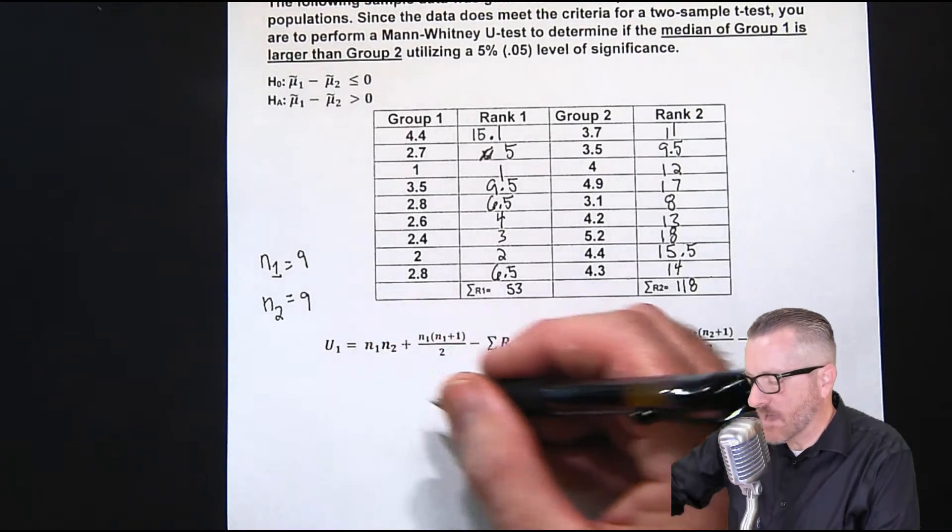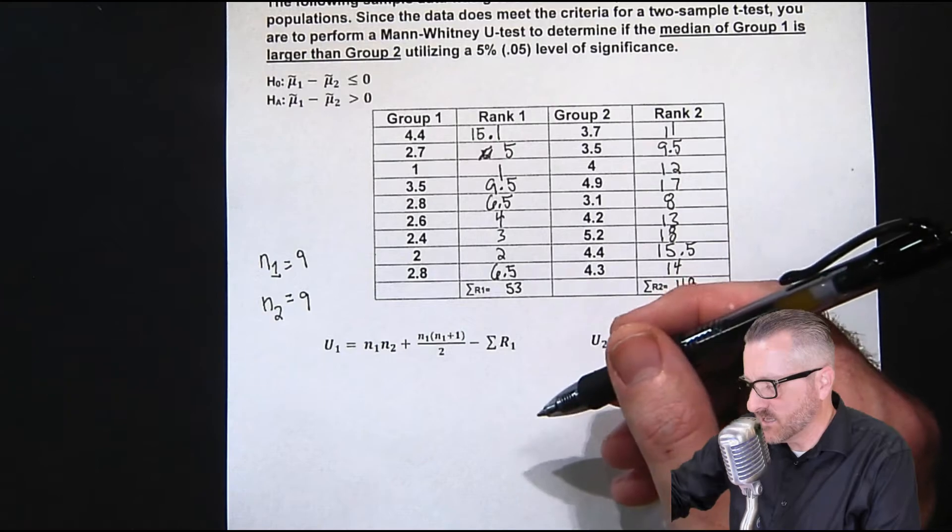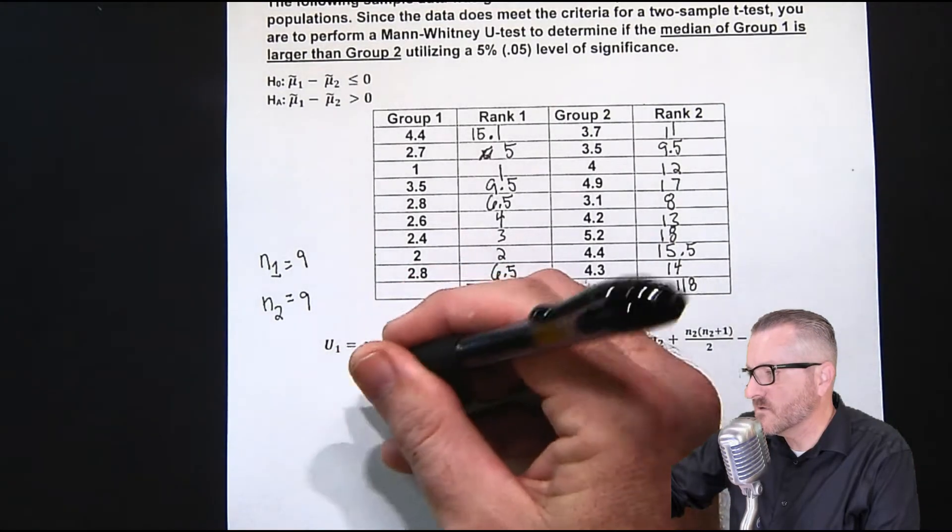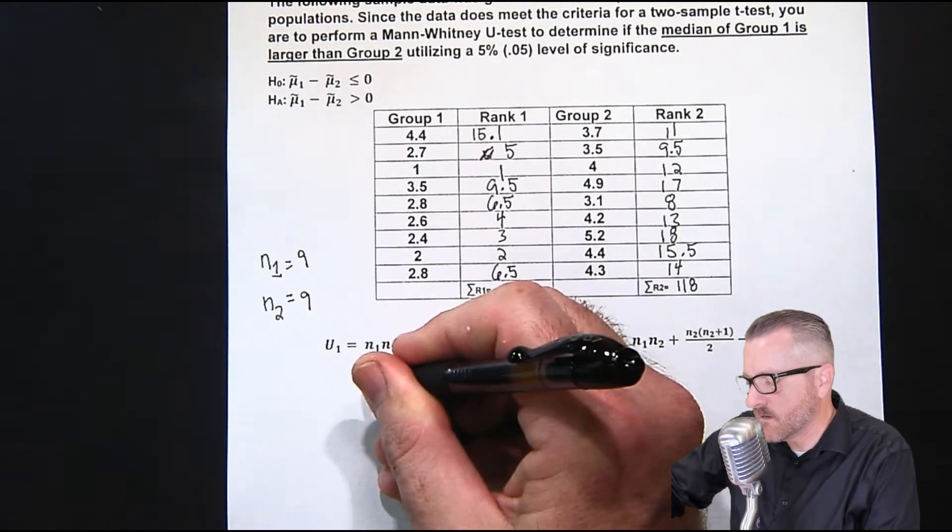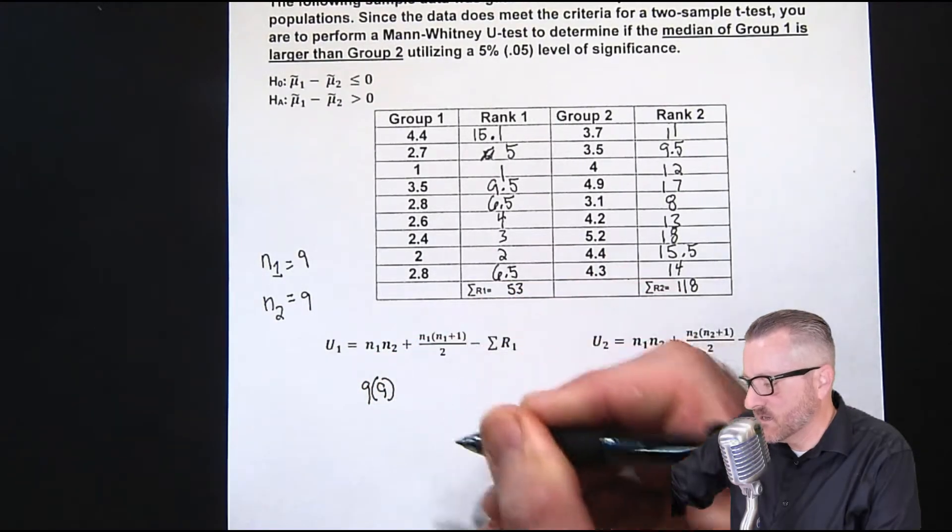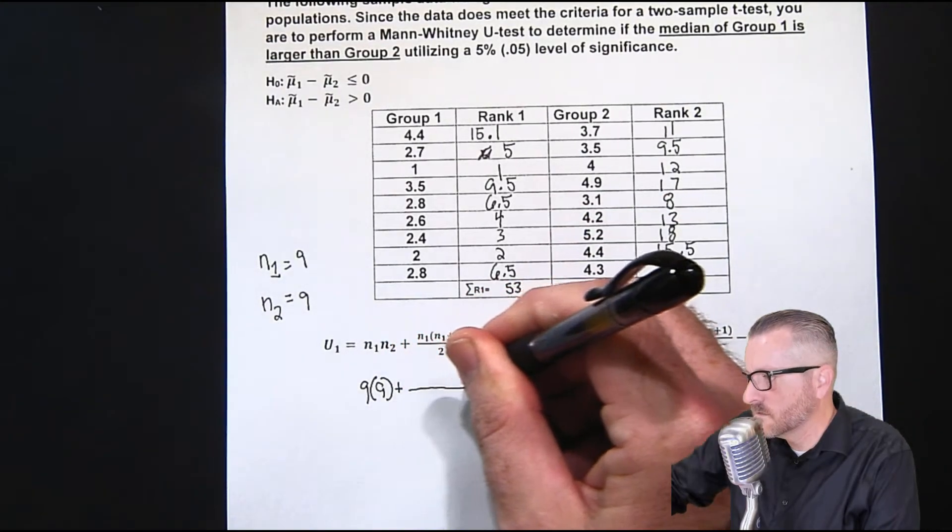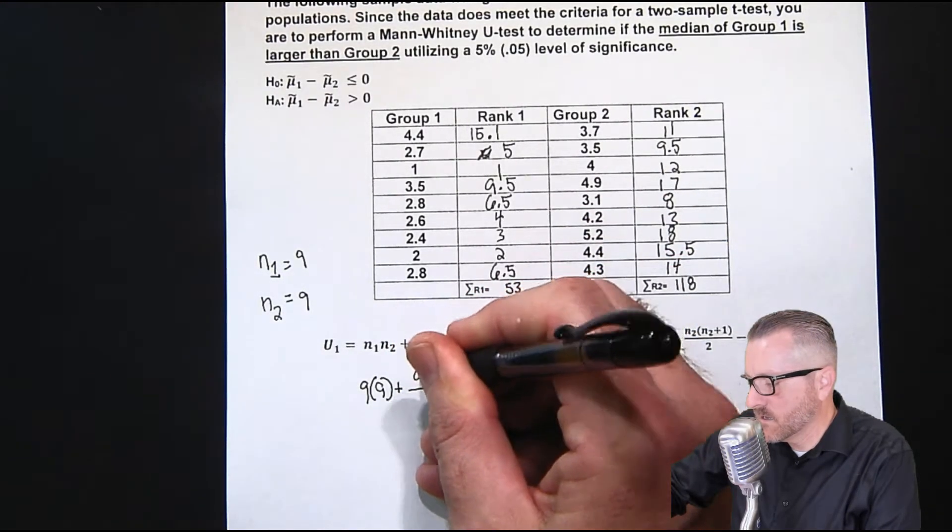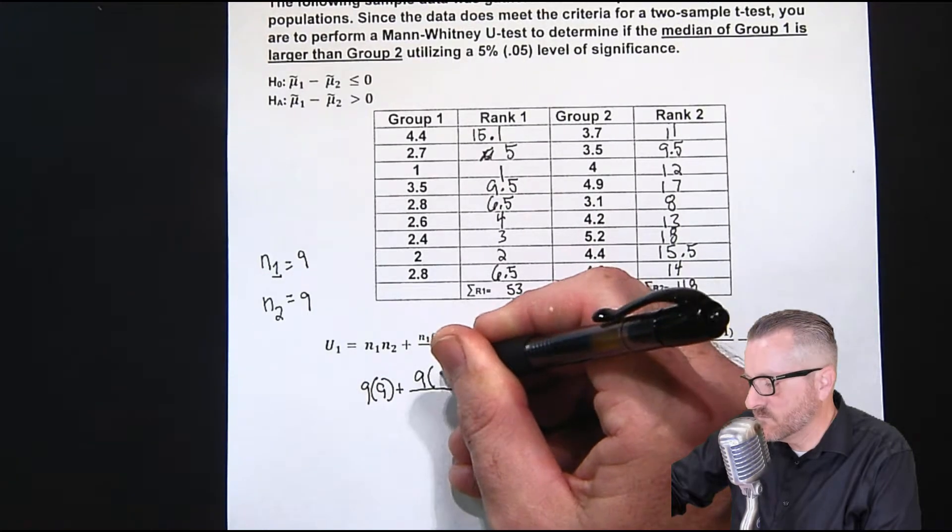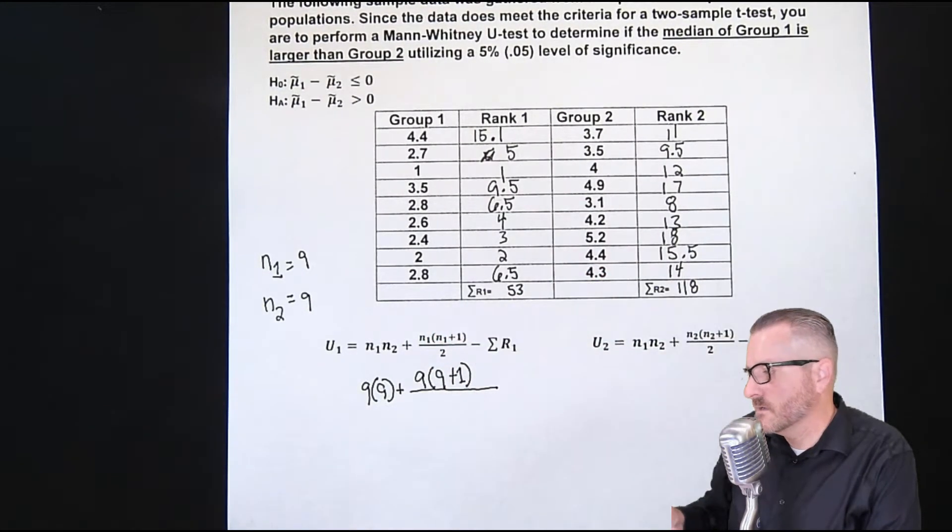So I'm going to do the math here. I'll lay it all out and then we'll jump to the answer because it gets kind of messy doing all of this. So this is how the numbers actually lay out. So that's a nine multiplied by nine plus nine, parentheses, nine plus one over two.